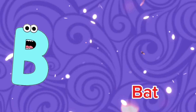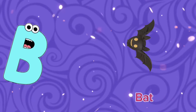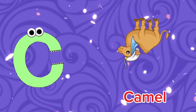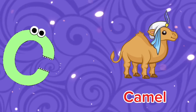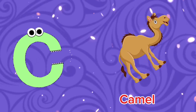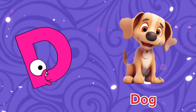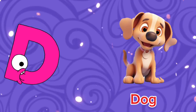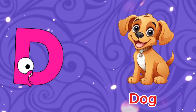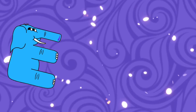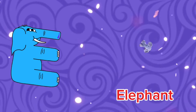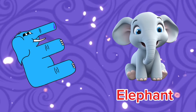B is for Bat, B, bat. B is for Bat, B. C is for Camel, C, camel. C is for Camel, C. D is for Dog, D, dog. D is for Dog, D. E is for Elephant, E, elephant. E is for Elephant, E.